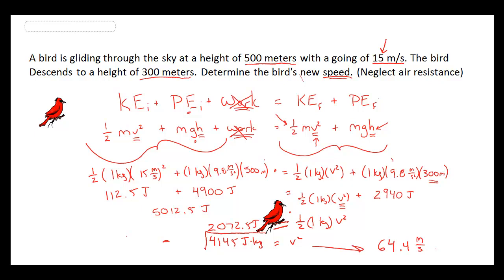So that sounds like a reasonable number for us. If we're looking at what happened here, the bird initially was at 500 meters elevation, going at a speed of 15 meters per second. The bird descended down to 300 meters and therefore would have lost 200 meters, 500 minus 300 is 200 meters worth of potential energy.